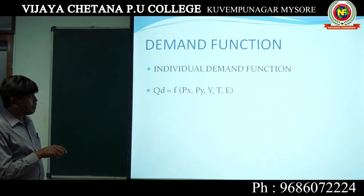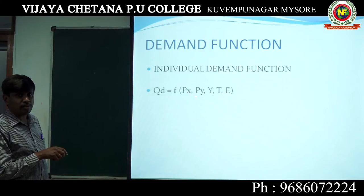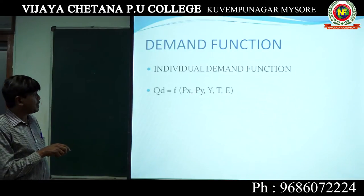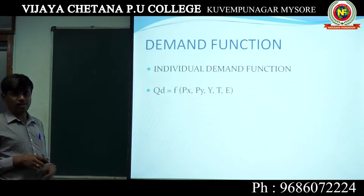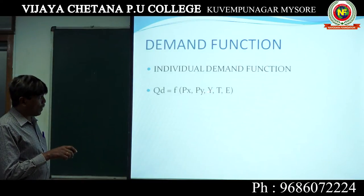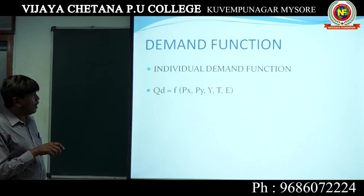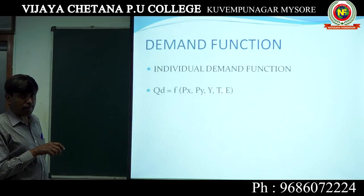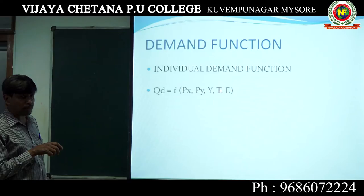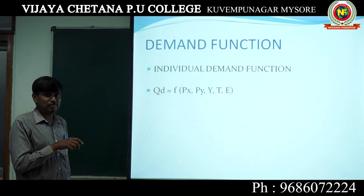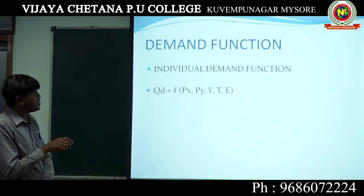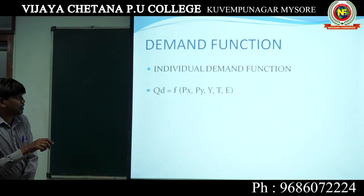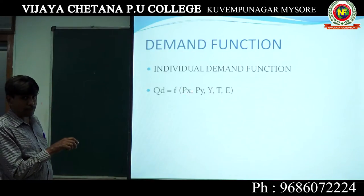Px means price of that particular good. Py means price of other related goods. Y means income of the consumer — income of the consumer plays an important role. T means taste and preferences. E means expectations. These are all various factors which decide the demand of a particular good.